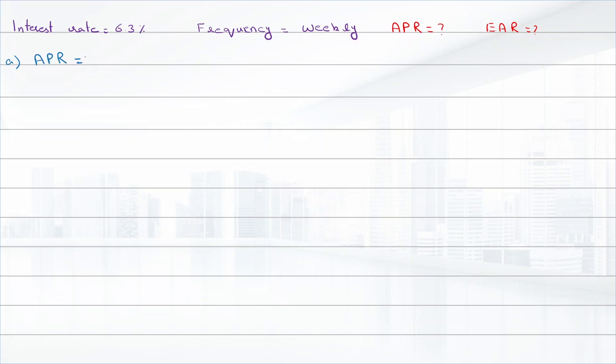Part A requirement is APR, that is equal to interest rate times compounding frequency. Interest rate is 6.3 percent, multiply by compounding frequency that is 52, and the answer is 327.6 percent.